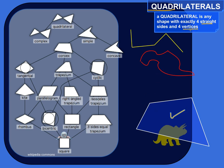Vertices is plural for vertex. And a vertex is where two line segments or two rays meet. They're sort of end point of the line segments or rays.